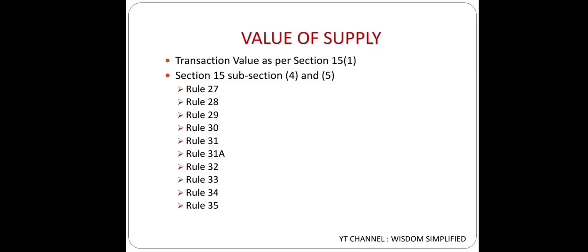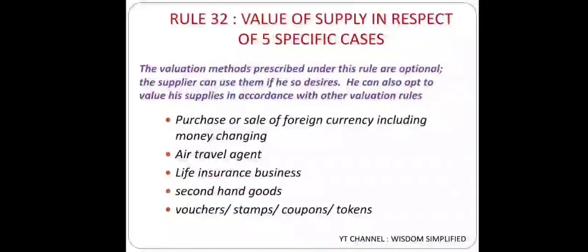Today we are going to see Rule 32. Rule 32 covers Value of Supply in respect of five specific cases. There are five such cases given in Rule 32 about how to determine Value of Supply. The five cases are: first, purchase and sale of foreign currency including money changing; second, air travel agent; third, life insurance business; fourth, second hand goods; and fifth, vouchers, stamps, coupons and tokens.